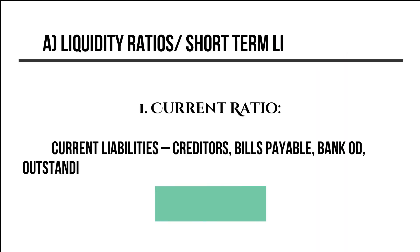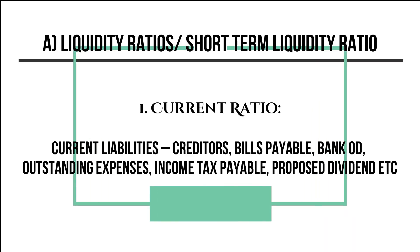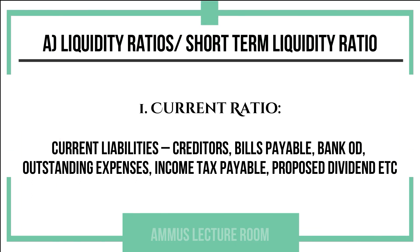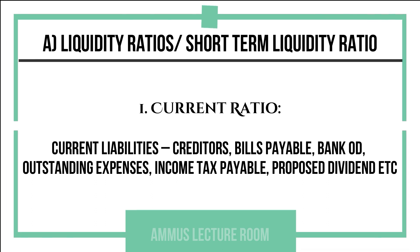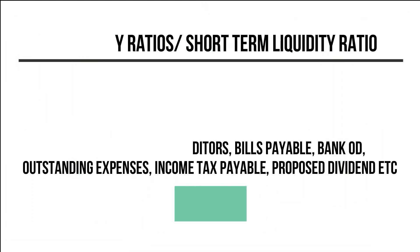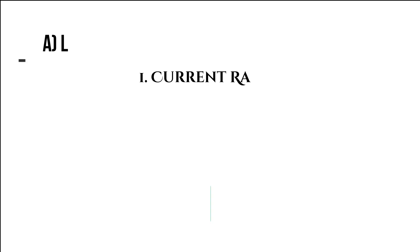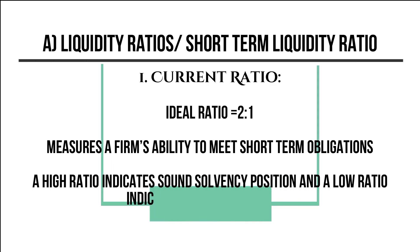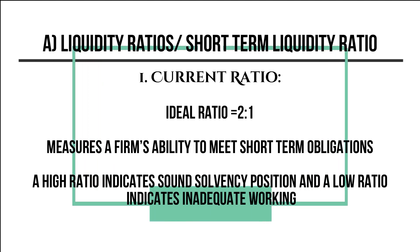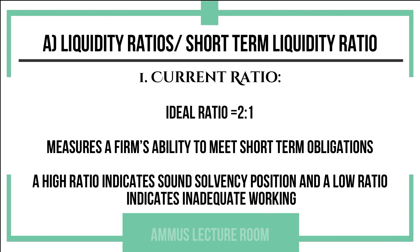Current liabilities include creditors, bills payable, bank overdraft, outstanding expenses, income tax payable, and proposed dividends. The ideal current ratio is 2:1. The current ratio measures a firm's ability to meet its short-term obligations.